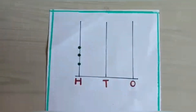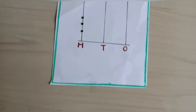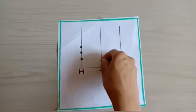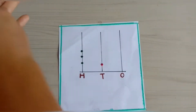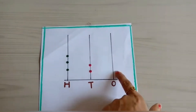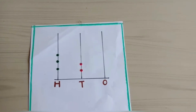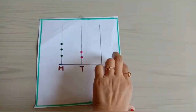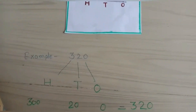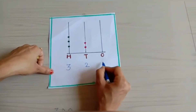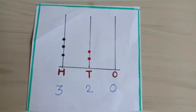I have placed three stickers here which means three hundred. This is two stickers which shows the value of two tens. The last one is empty because the number is zero, so we don't put any stickers or beads here. So I have represented three hundred and twenty on an abacus.